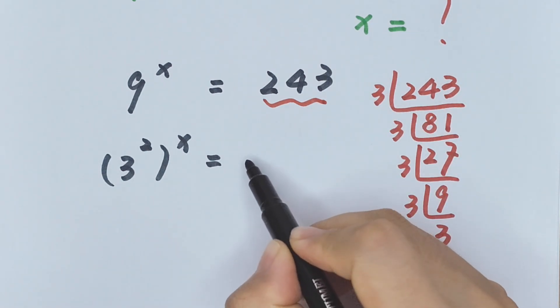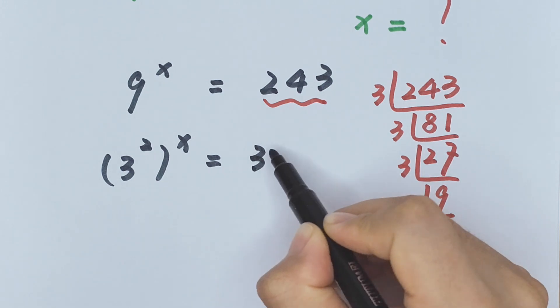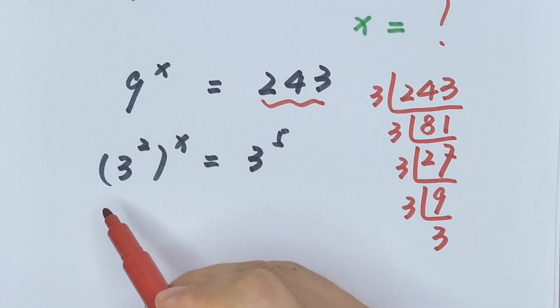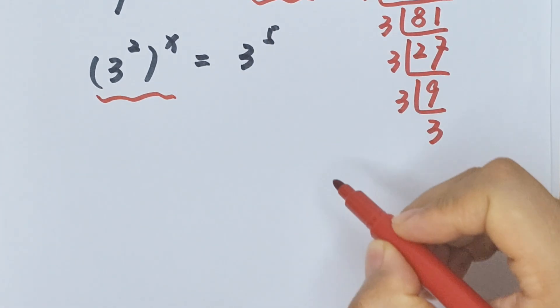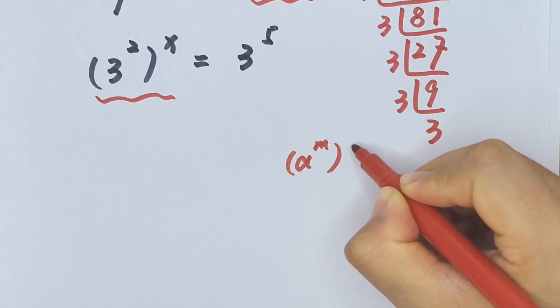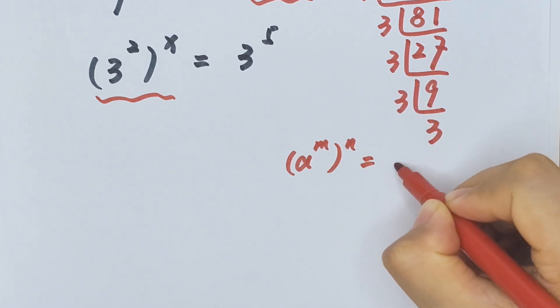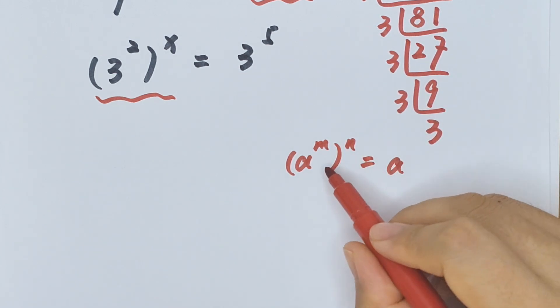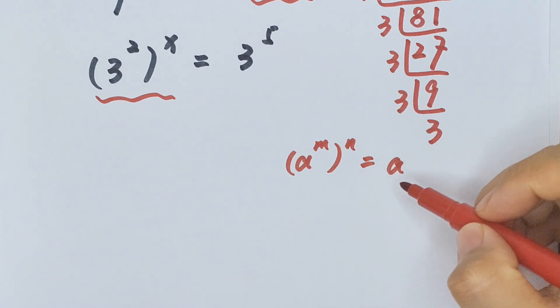Same as 3 to the power of 5. Now on the left side we know a to the power of m, bracket to the power of n, equals a to the power of - we multiply the powers - so a to the power of m times n.